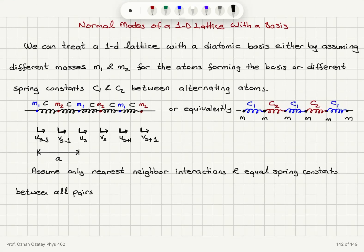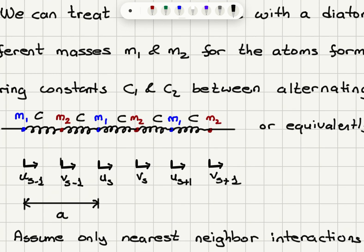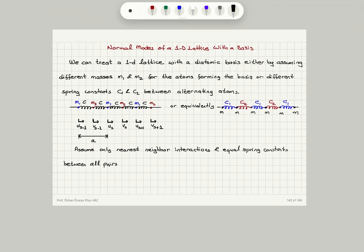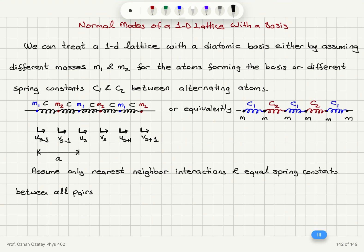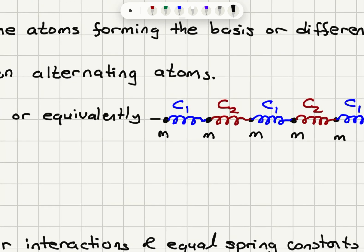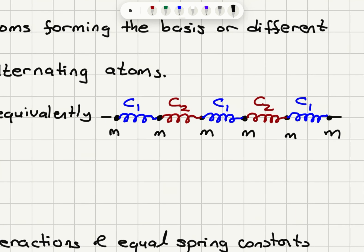We will analyze the normal modes of a one-dimensional lattice with a basis. There are two ways to look at this problem. We can treat a one-dimensional lattice with a diatomic basis either by assuming different masses M1 and M2 for the atoms, with alternating masses but the same force constant C for the springs connecting them, or we can assume different spring constants C1 and C2 between alternating atoms of the same mass. These two approaches are essentially identical and give the same result.